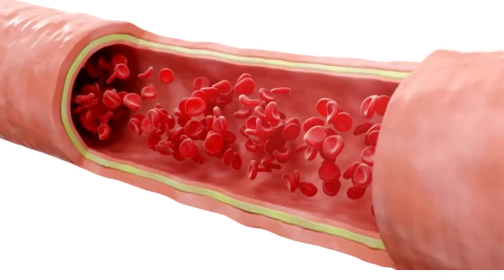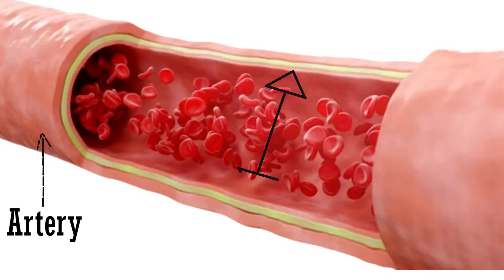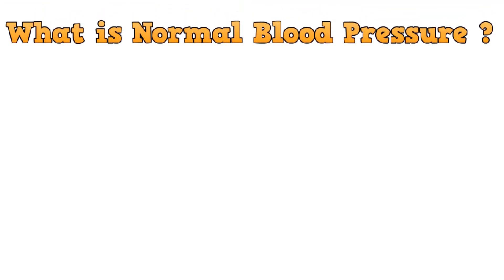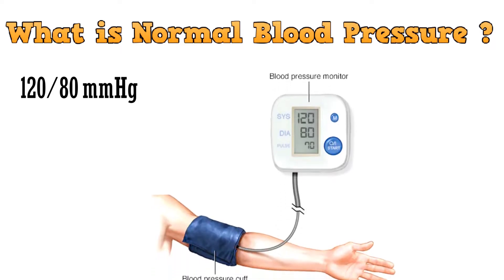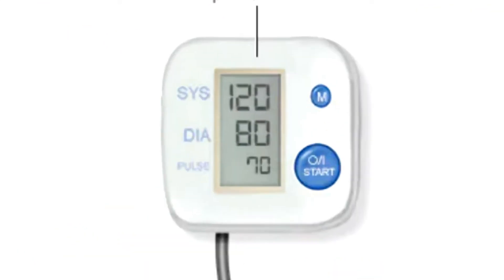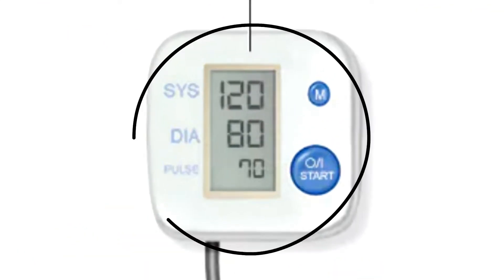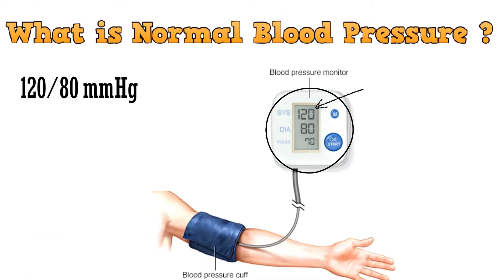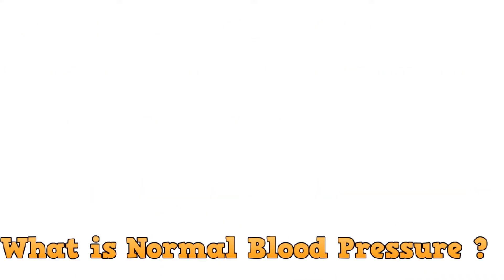As you can see, this is the artery. And the pressure exerted by blood against these walls is the blood pressure. So what is normal blood pressure? When your blood pressure is checked with an electronic blood pressure machine, you can see the monitor showing values like this. Here, this 120 is the systolic blood pressure.